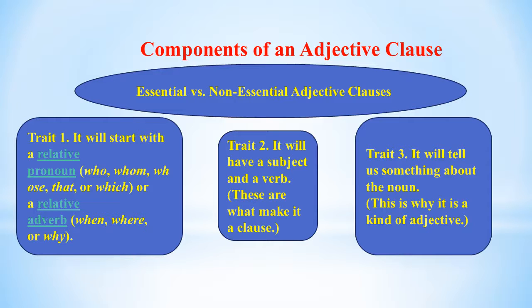Concerning the components of adjective clauses: an adjective clause, also called a relative clause, will have three traits. Trait one: it will start with a relative pronoun — who, whom, whose, that, or which — or a relative adverb — when, where, or why — which links it to the noun it is modifying. Note that quite often the relative pronoun can be omitted; however, with an adjective clause, it is always possible to put one in.